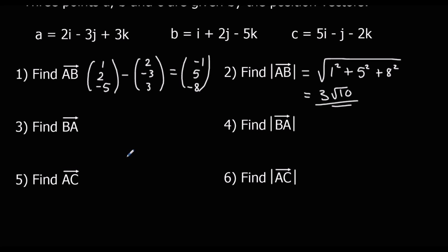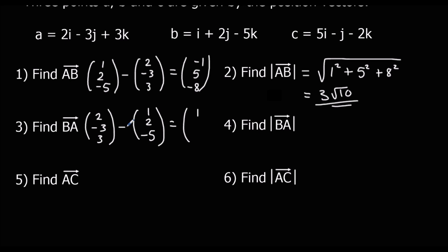Find b to a. So b to a is going to be a take away b. So a take away b: (2, negative 3, 3) take away (1, 2, negative 5). 2 take away 1 is 1; negative 3 take away 2 is negative 5; and 3 take away negative 5 is 8. So it's the same as a to b in the other direction — b to a is a to b times by minus 1, just the other way around. And mod b to a will also be 3 root 10, because it's the same movement in the other direction.